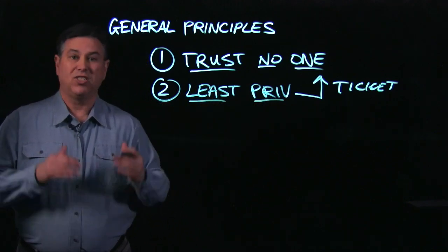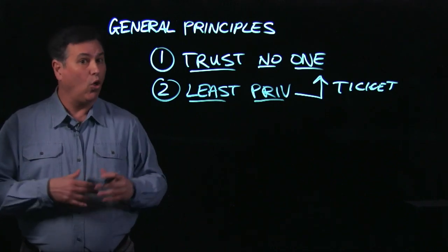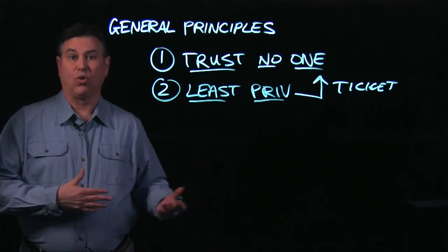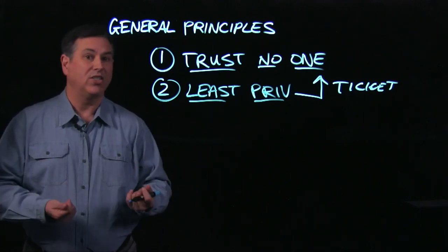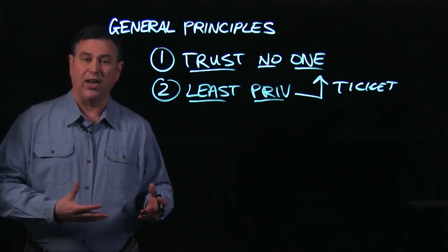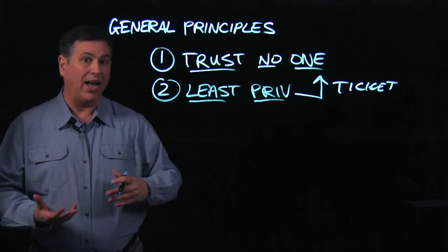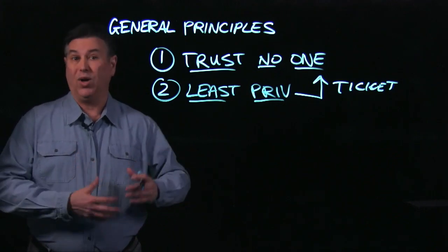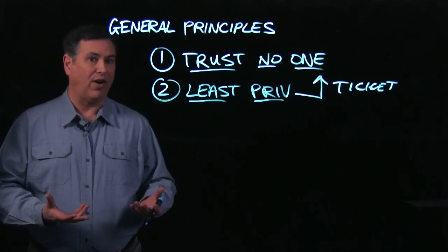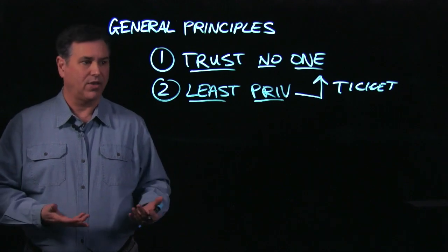Least privilege also means staying within your pay grade. If we're using mandatory access controls, role-based access controls, or attribute-based access controls, the identity context at the time matters: what device are you using, where are you using it from, wired or wireless or VPN, what time of day, what's the posture of that device, and what is your role at the time? Least privilege.